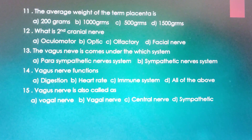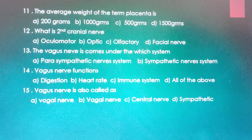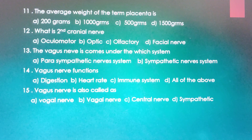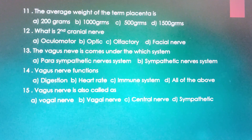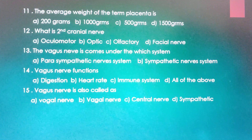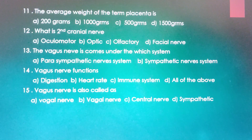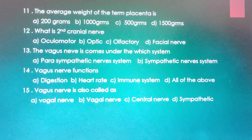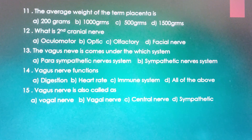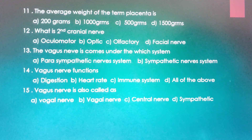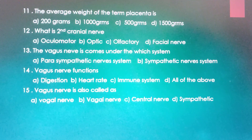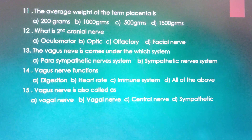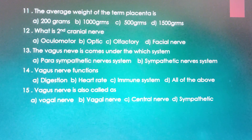The average weight of the placenta is: 200 grams, 1000 grams, 500 grams, or 1500 grams. The correct answer is 500 grams.